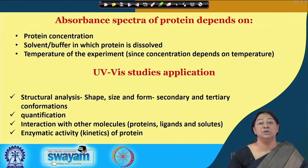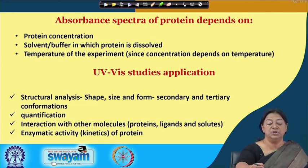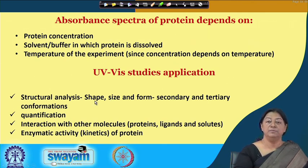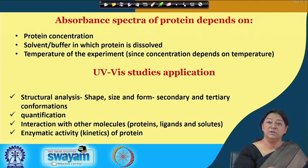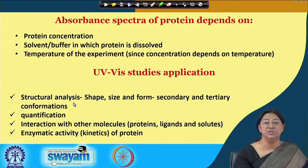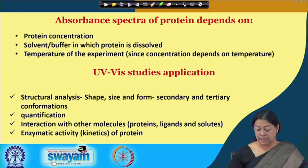The absorbance of a protein depends on the protein concentration, the specific buffer, and the temperature of the experiment. UV visible studies can provide information about interactions with other proteins, small ligands, or the solvent. We can quantify the protein using UV spectroscopy and determine whether there are any structural changes in the protein.